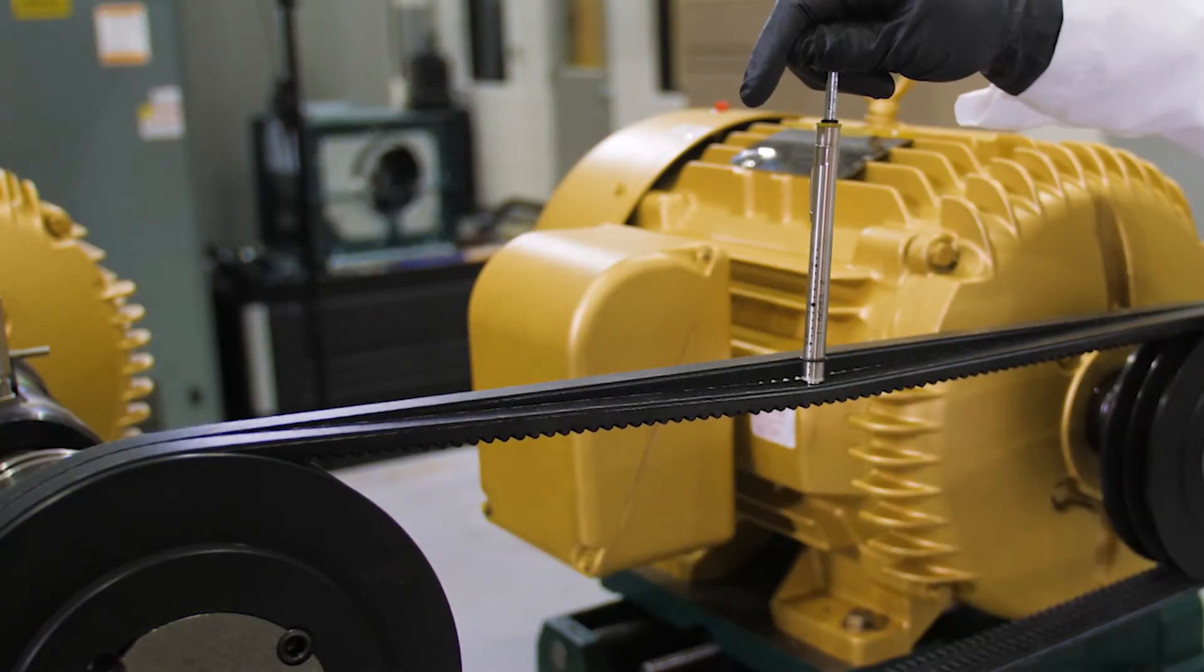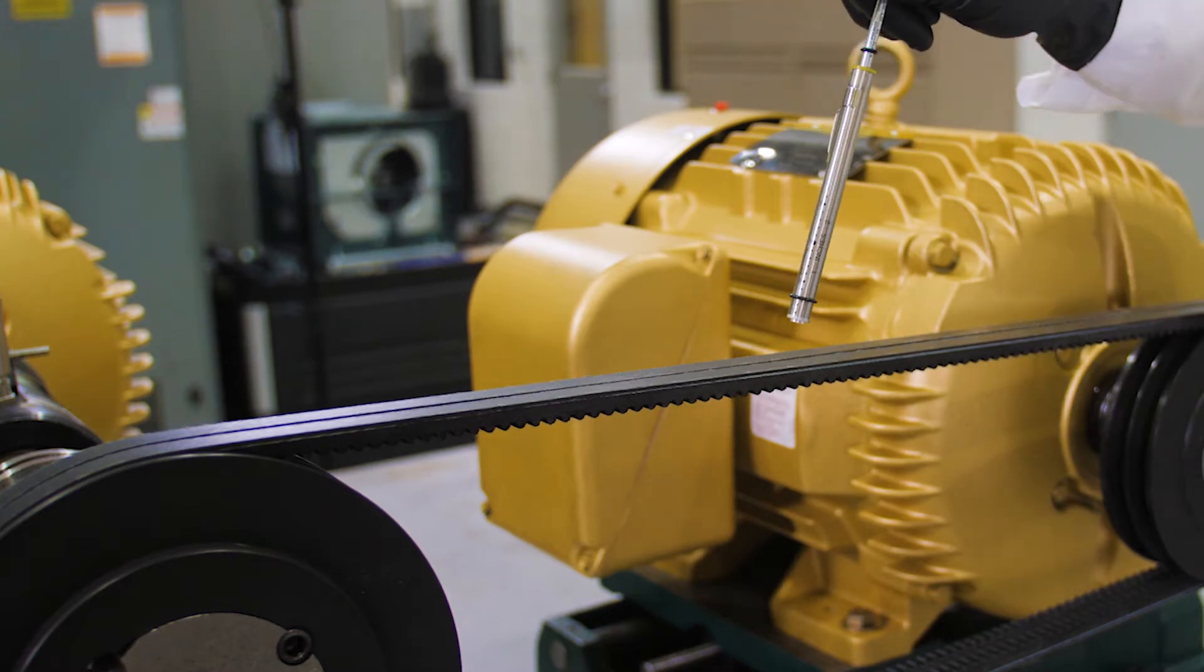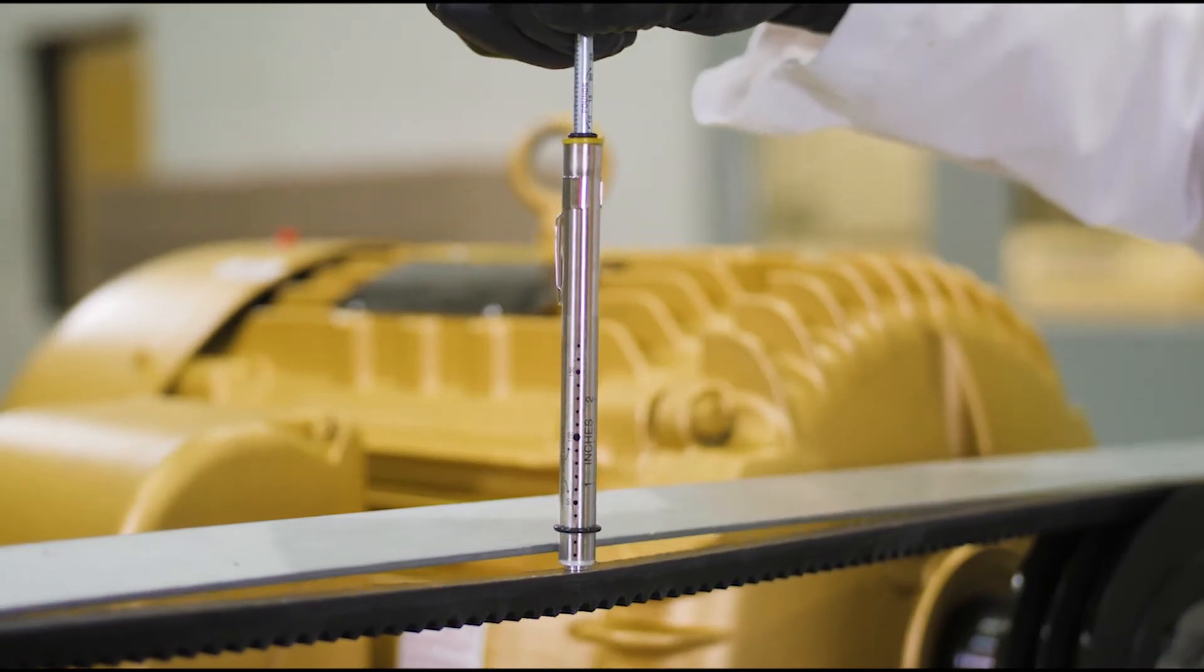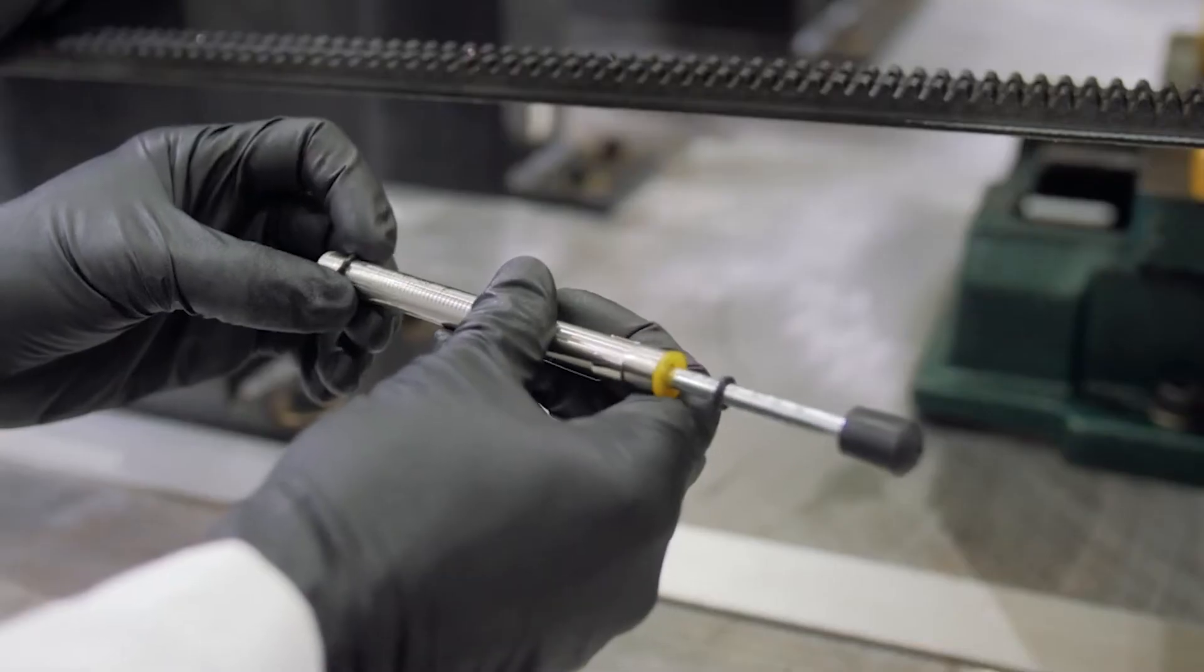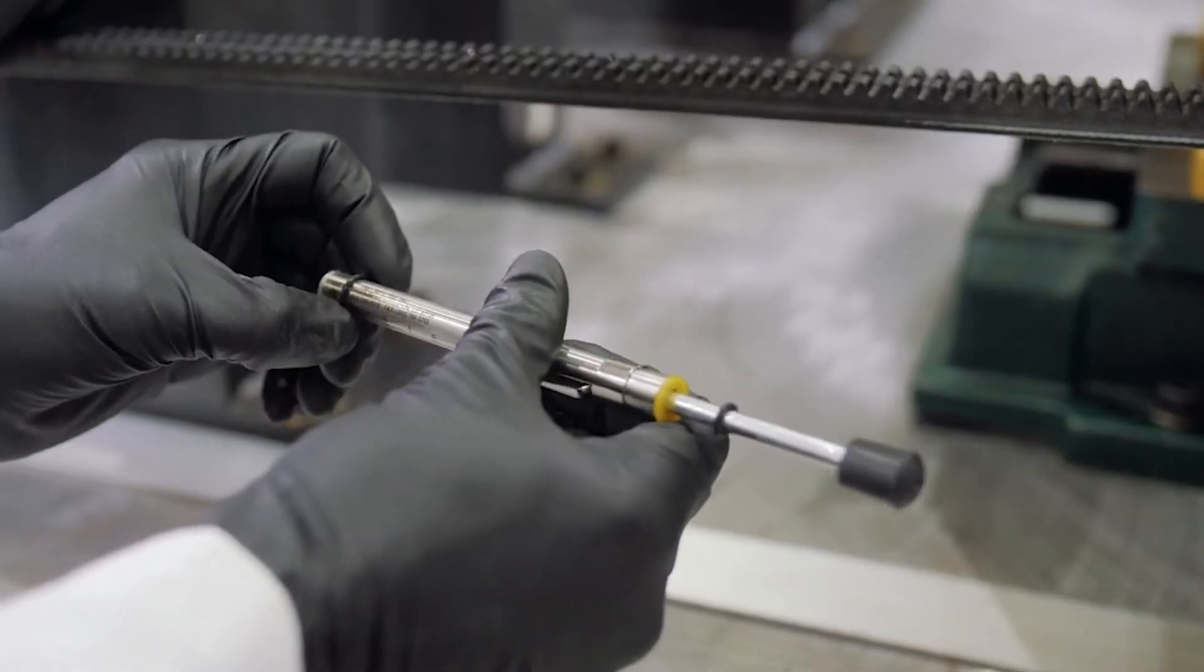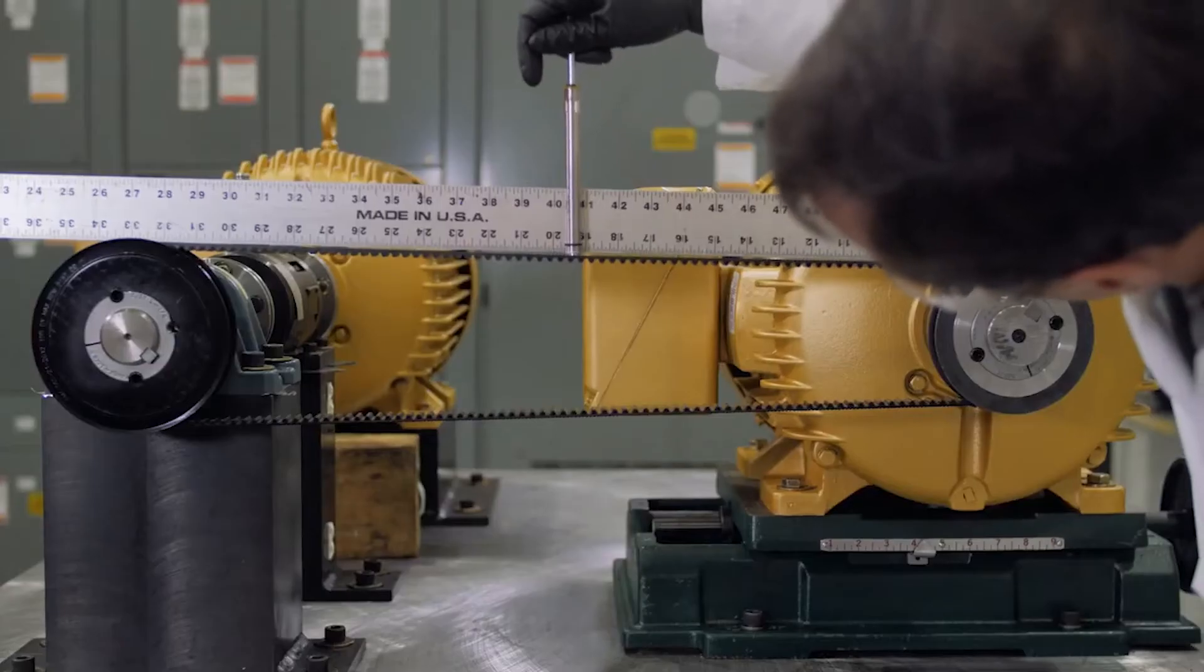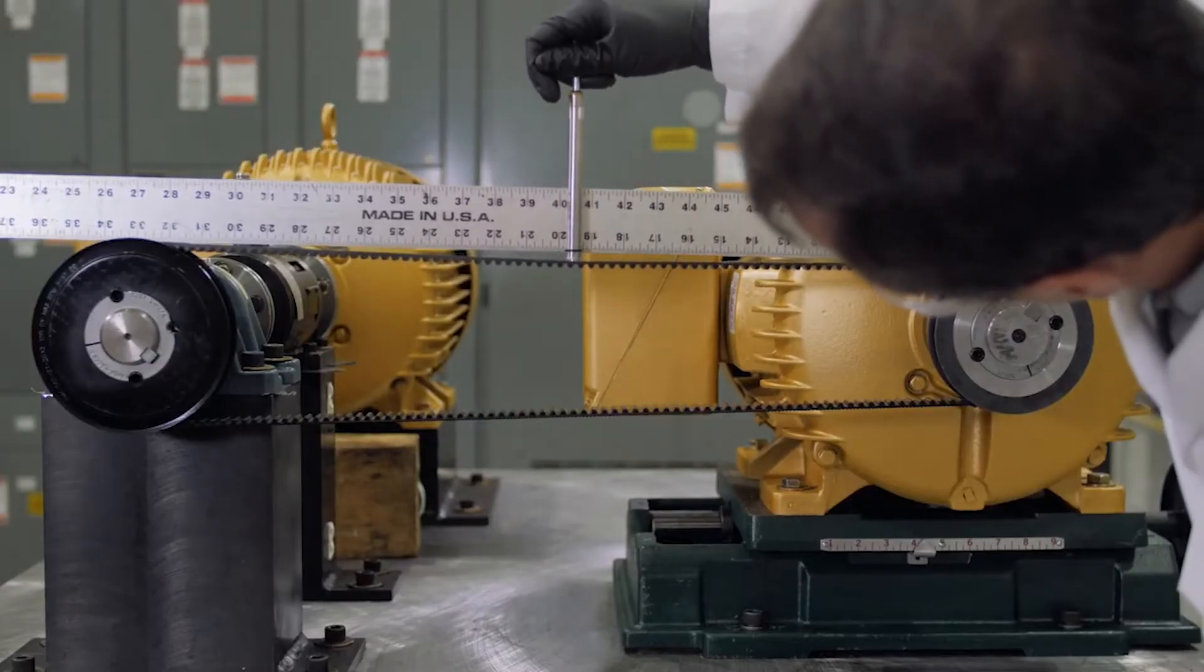V-Belt and synchronous belt drives are widely used to change speeds and transmit torque from a driver, such as an electric motor, to the driven equipment. This video demonstrates the force deflection tensioning method for a V-Belt drive. The same practices apply to synchronous belt drives.